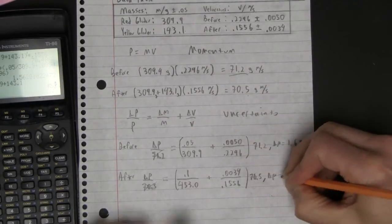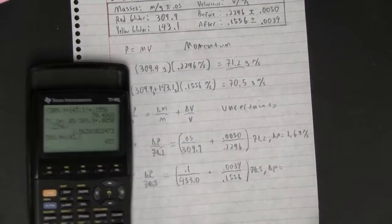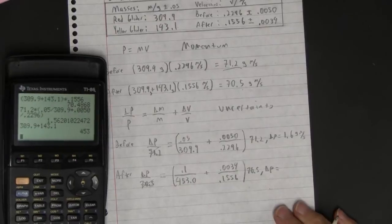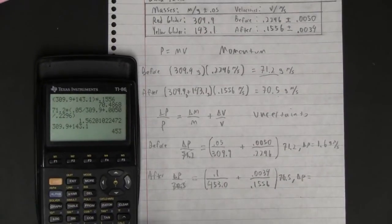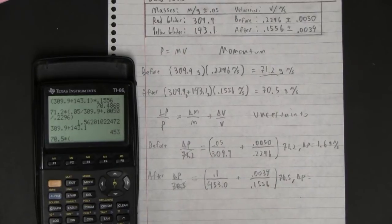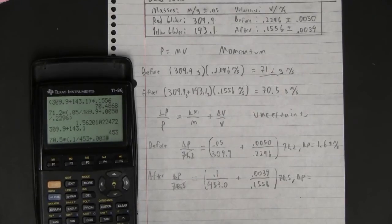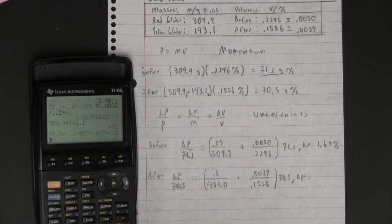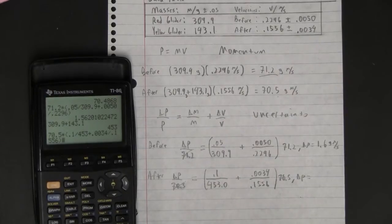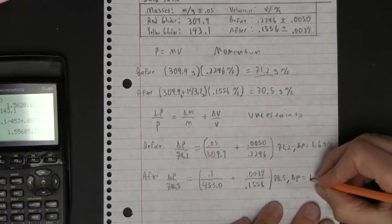All right, so I'm going to go 70.5 times parenthesis 0.1 divided by 453. Plus 0.0034 divided by 0.1556. Have I got everything? I think I do. And that's about 1.6 again. They won't always be the same.